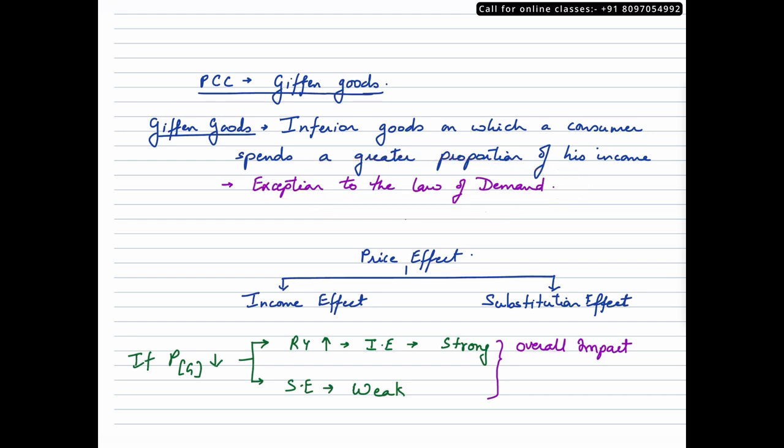When I say exception, what does it mean? It indicates that with a fall in price, the quantity demanded for Giffen goods would also fall and with a rise in price, the quantity demanded for Giffen goods would also rise. That means the price and quantity demanded of Giffen goods vary directly.